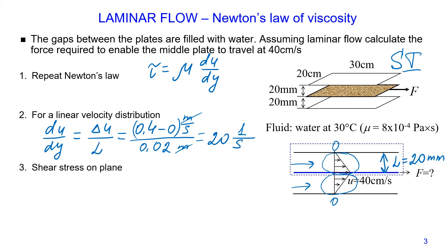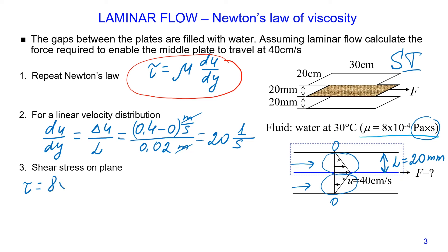Now we can calculate the shear stress on one side of the middle plate using Newton's law of viscosity. The dynamic viscosity of water is given in SI units as 8 × 10⁻⁴ Pascal·seconds, so no conversion is needed. Multiplying by the velocity gradient of 20 s⁻¹, the shear stress equals 0.016 N/m² or 0.016 Pascal.